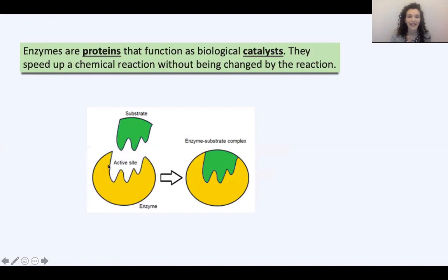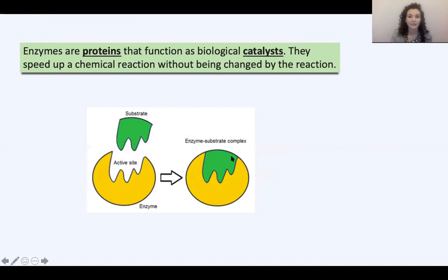The active site is specific to the substrate — the thing that's going to carry out the reaction, that's being broken down or reacted. That substrate fits into the active site like a puzzle piece, so the active site is exactly the right shape for the substrate to fit inside it. When they fit together, the enzyme and substrate form what's called an enzyme-substrate complex. Please pause the video now and draw yourself a diagram of an enzyme and a substrate forming an enzyme-substrate complex.